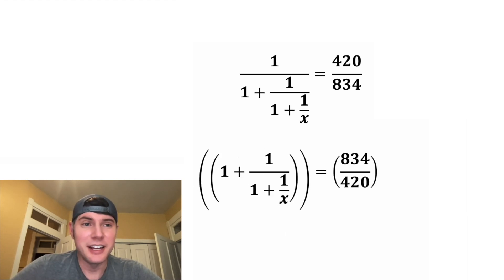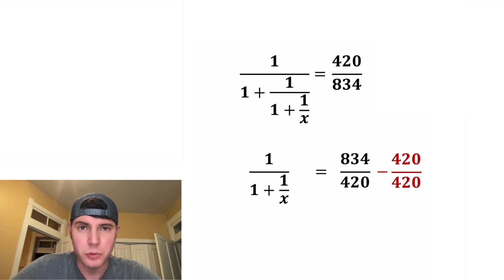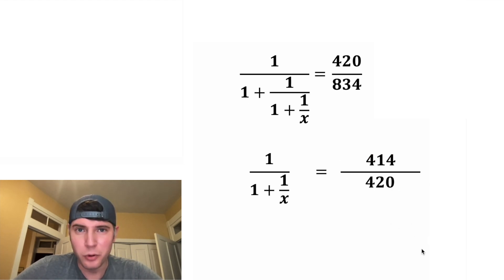And anything over one is just that anything. Let's get rid of our parentheses and subtract one from both sides. This one and this negative one cancel, but on this side we need a common denominator. So this negative one is gonna become negative 420 over 420. And now that these match, we can write it as a single fraction. And 834 minus 420 is 414.